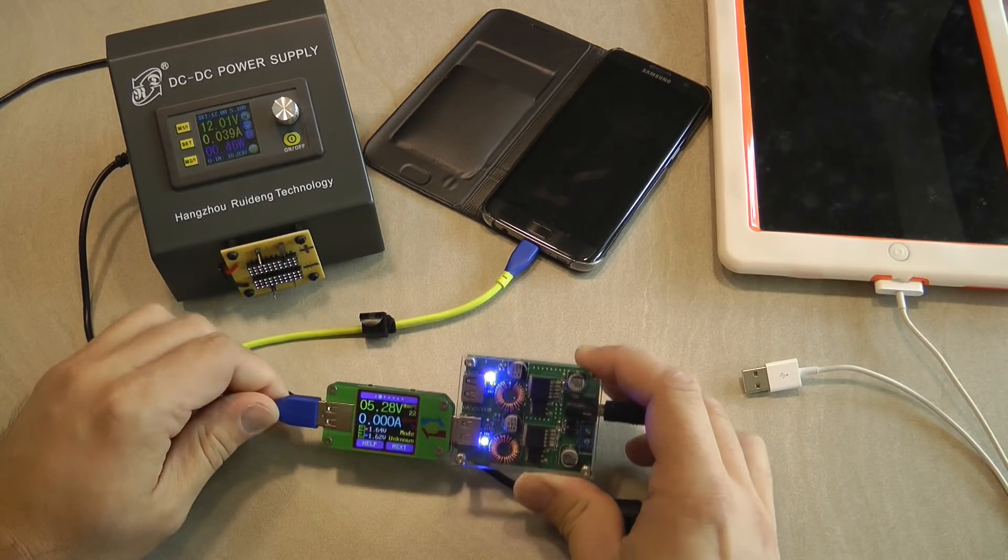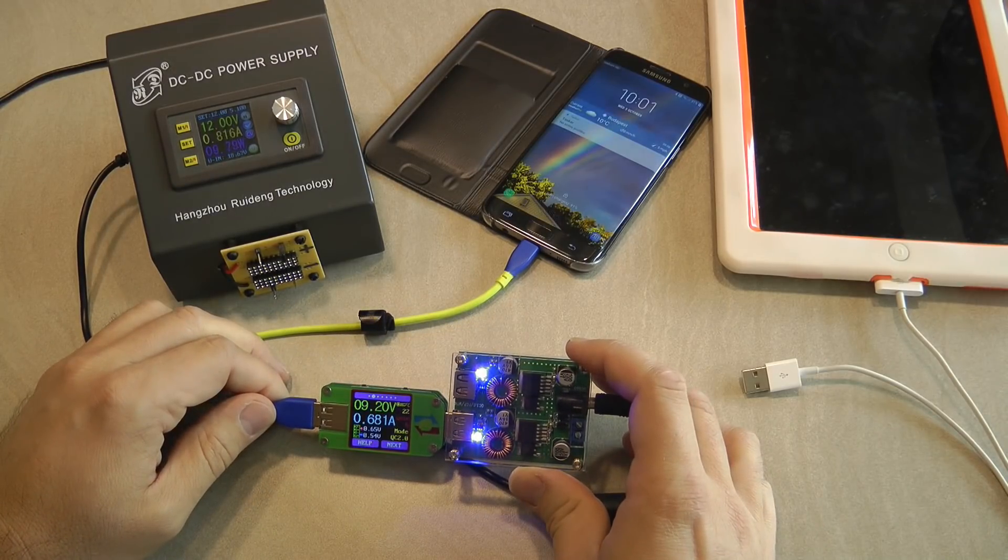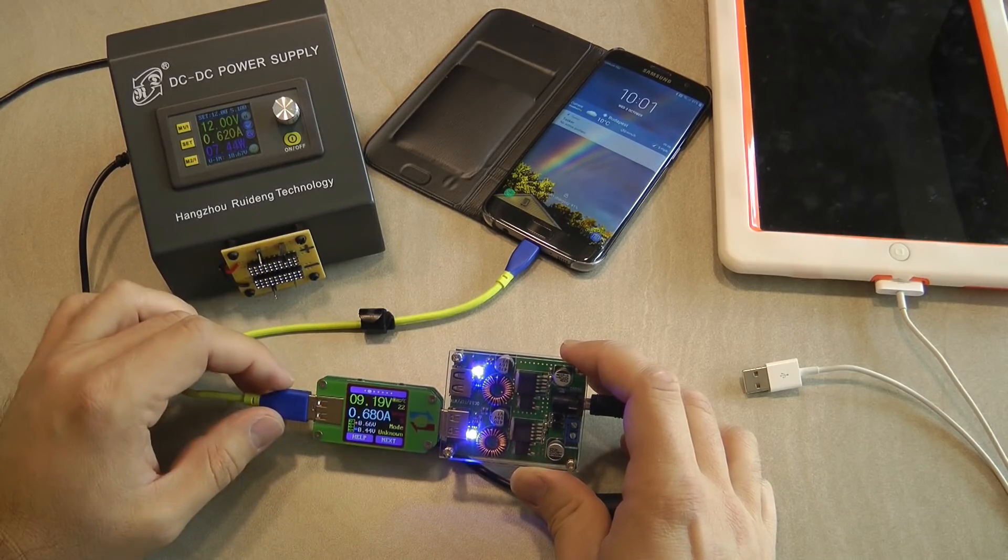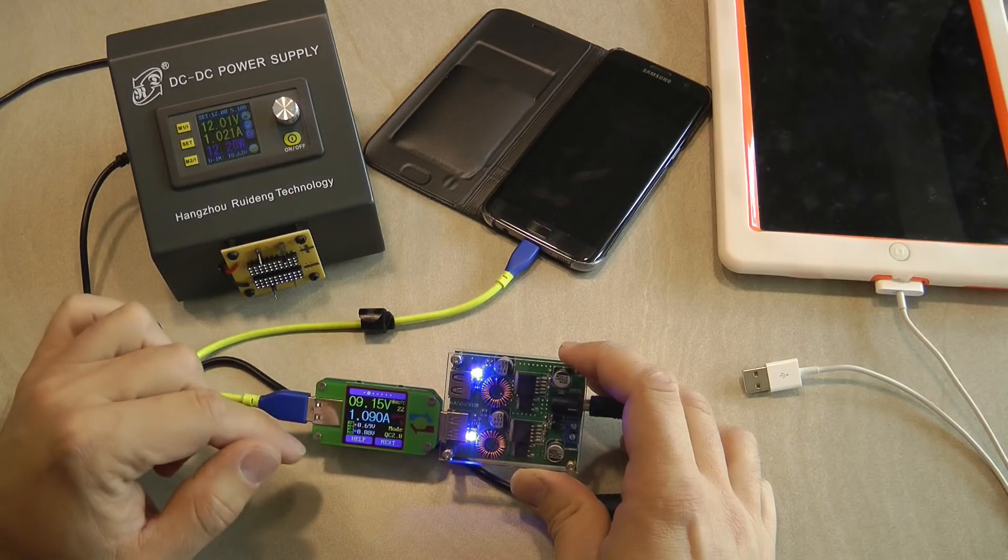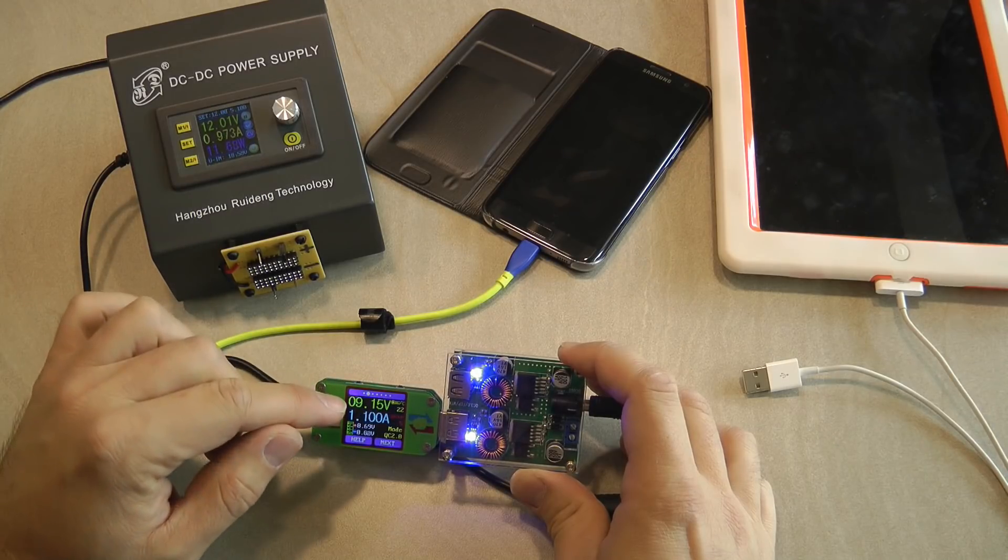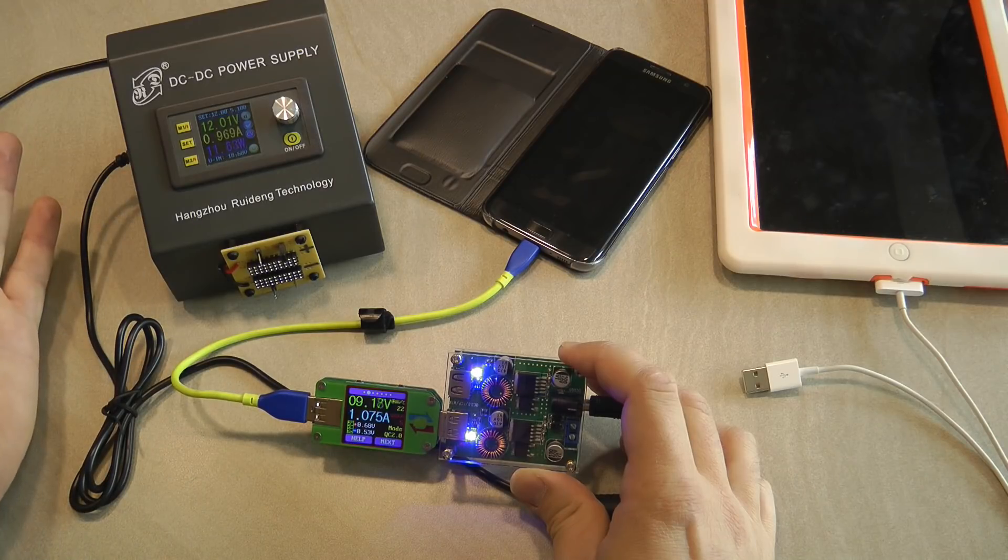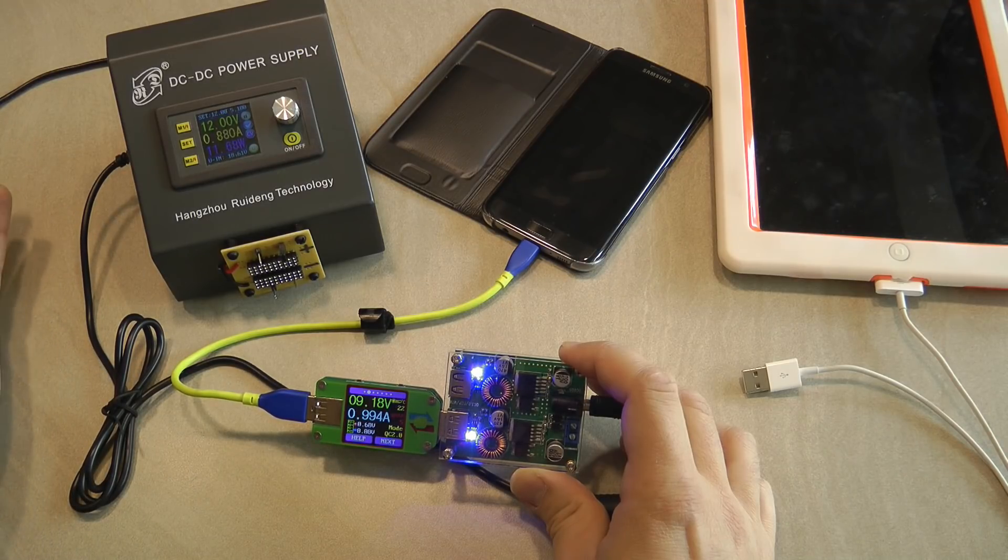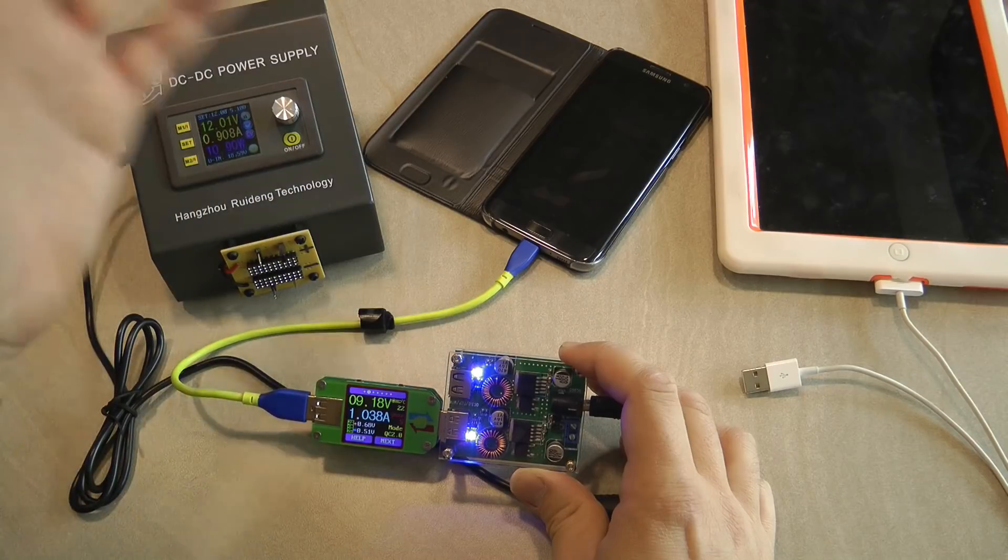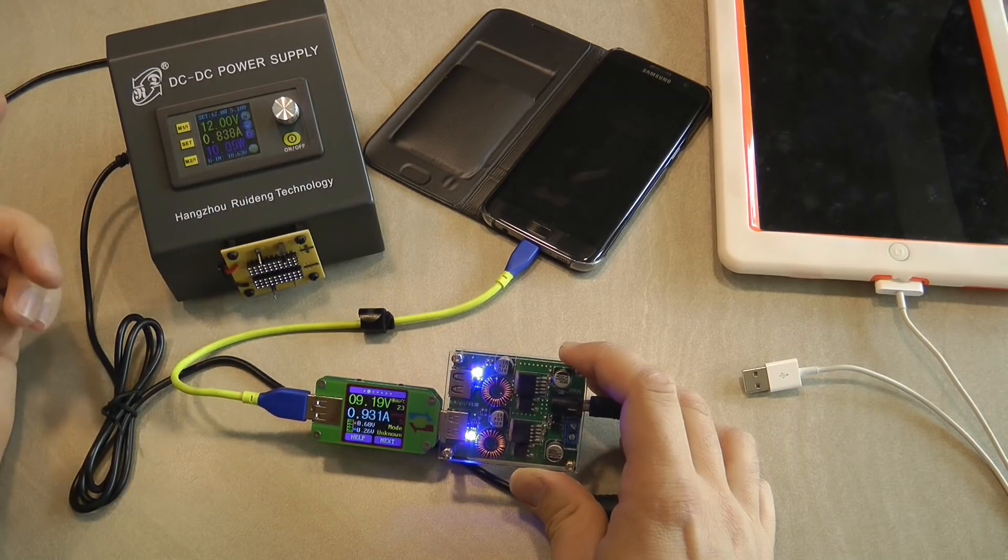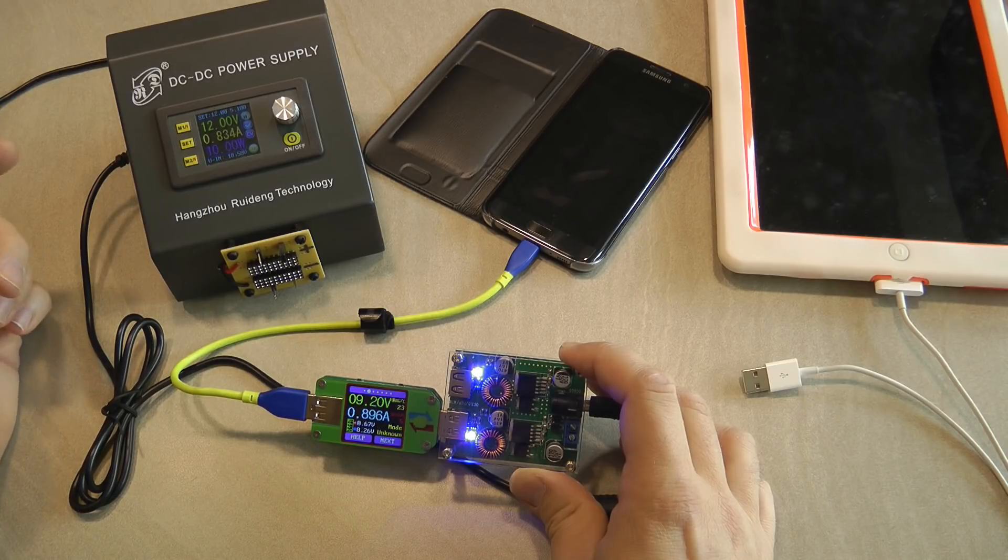As you can see, the port is outputting 5 volts. Of course nothing is connected. If I connect my phone - well, the phone is 91% so it's not going to draw a lot of power - but it has already switched to QC, one of the quick charging modes. Yeah, QC 2, because the voltage has already gone up to 9 volts. So it's charging at 9 volts 1 amp. That's probably not the full power, but the device has enough charge so it's probably not drawing the maximum power it can.